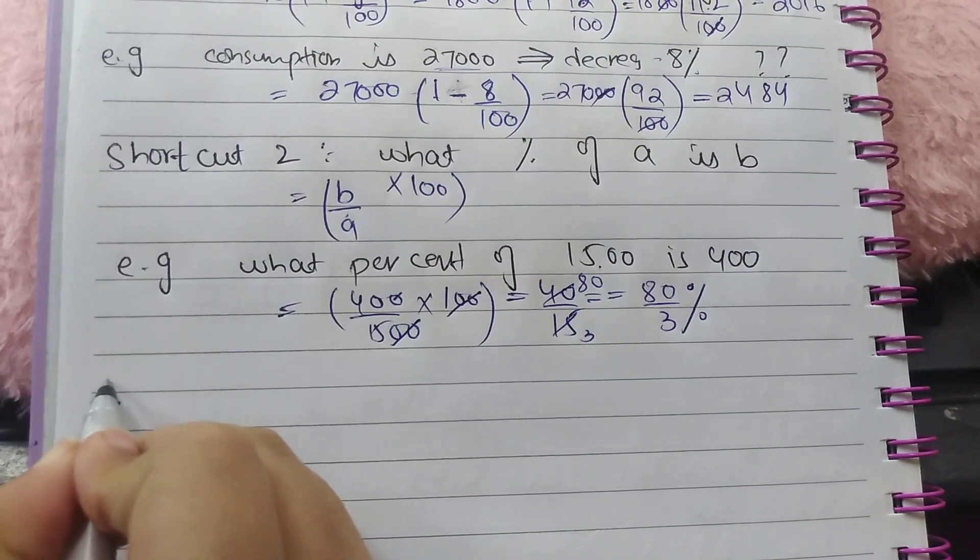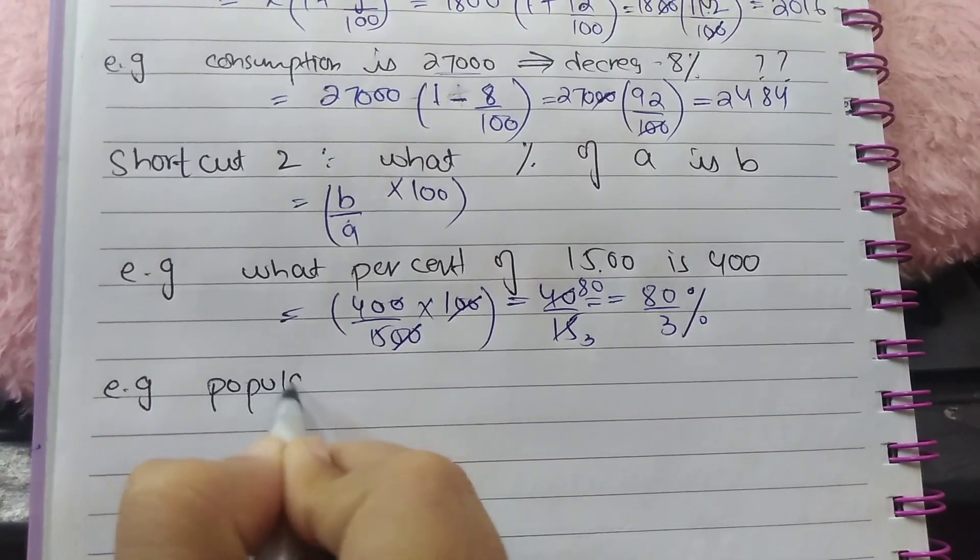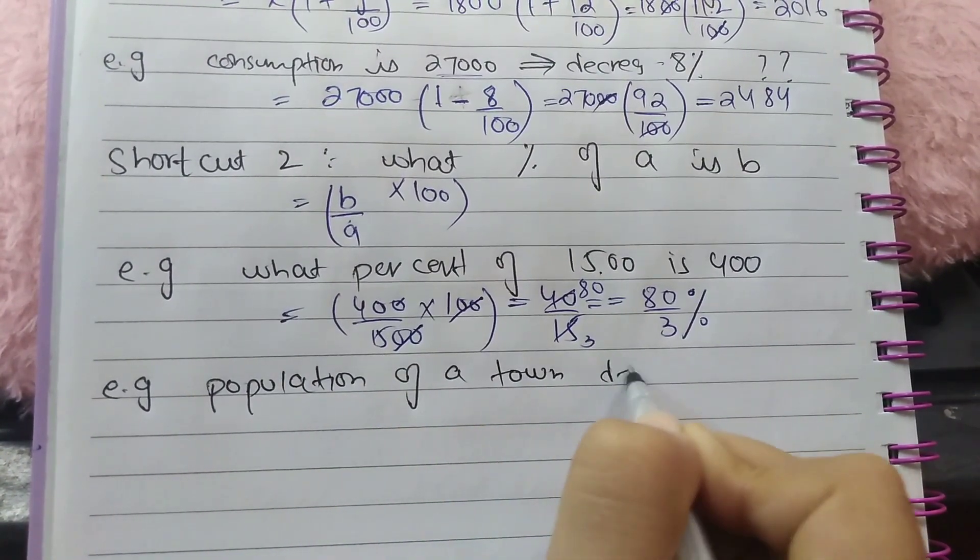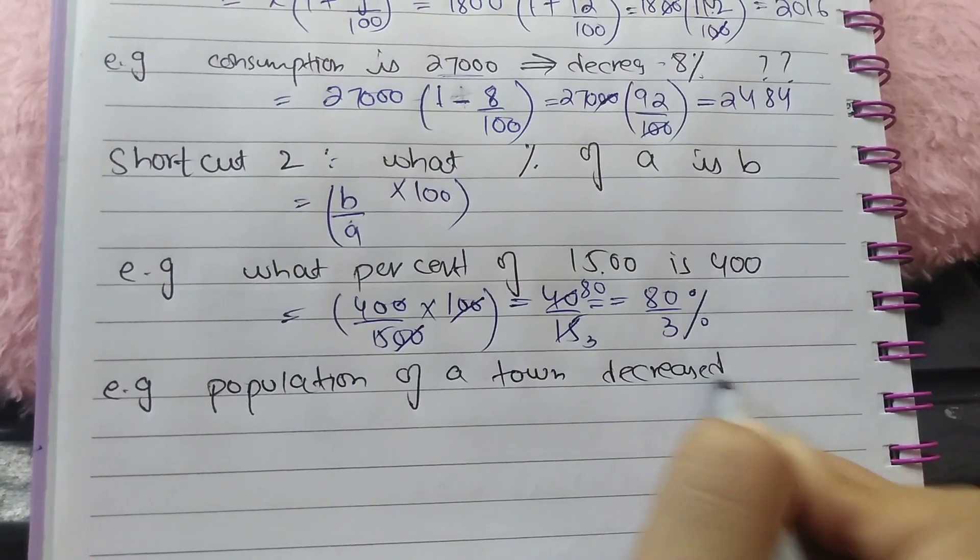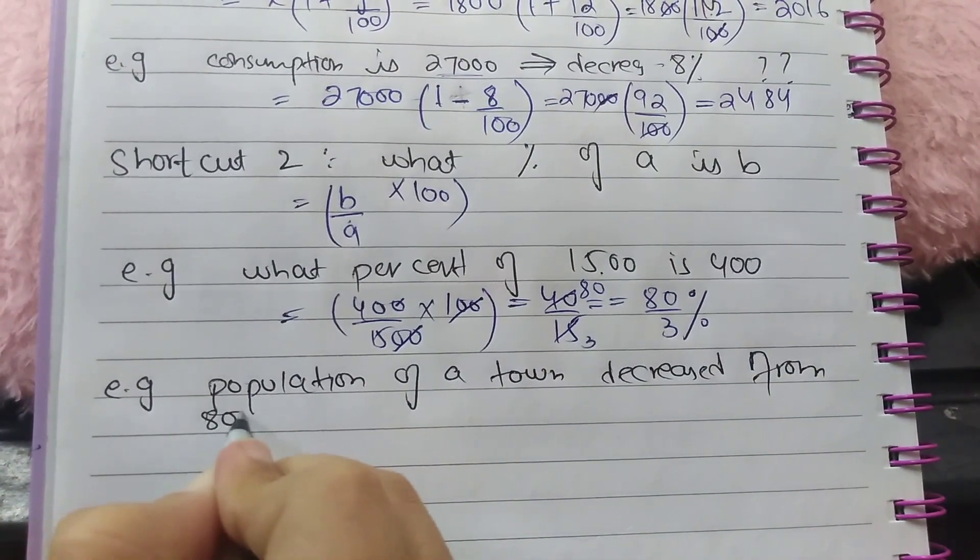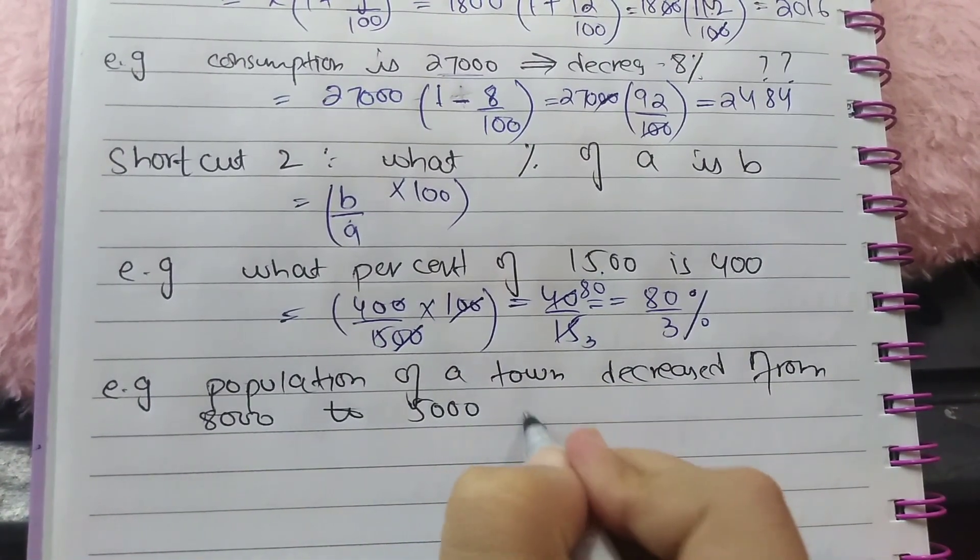Another question type: population of a town decreased from 8000 to 5000. What is the percentage decrease? So here what is the decreased? B is 5000, original A is 8000.